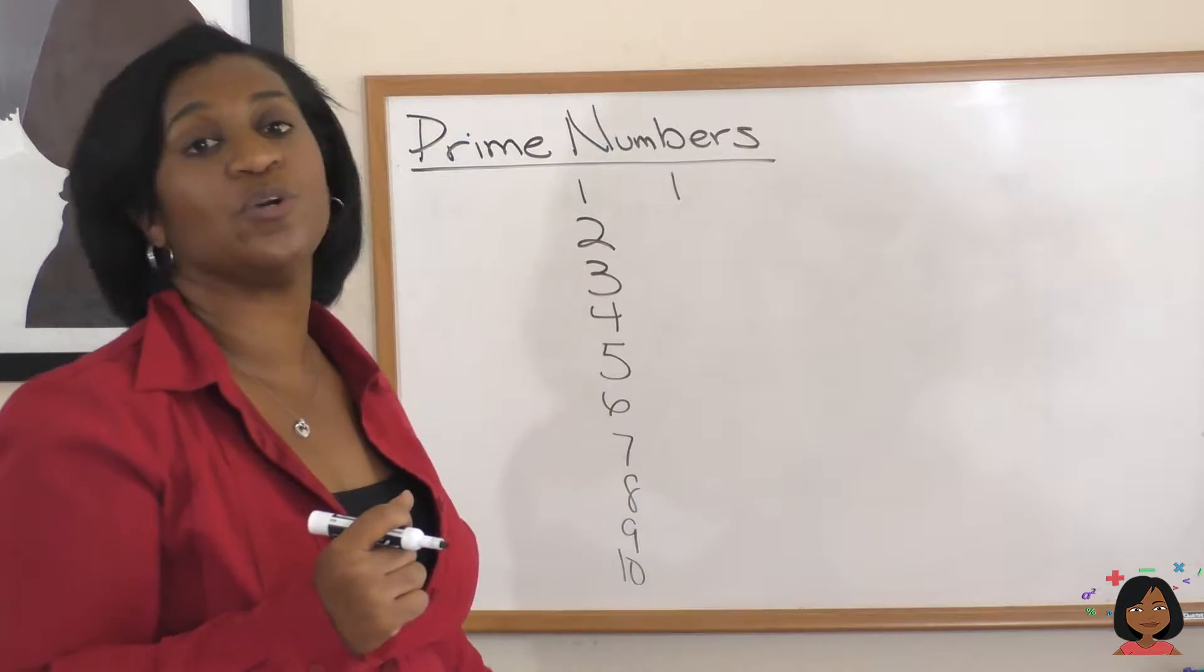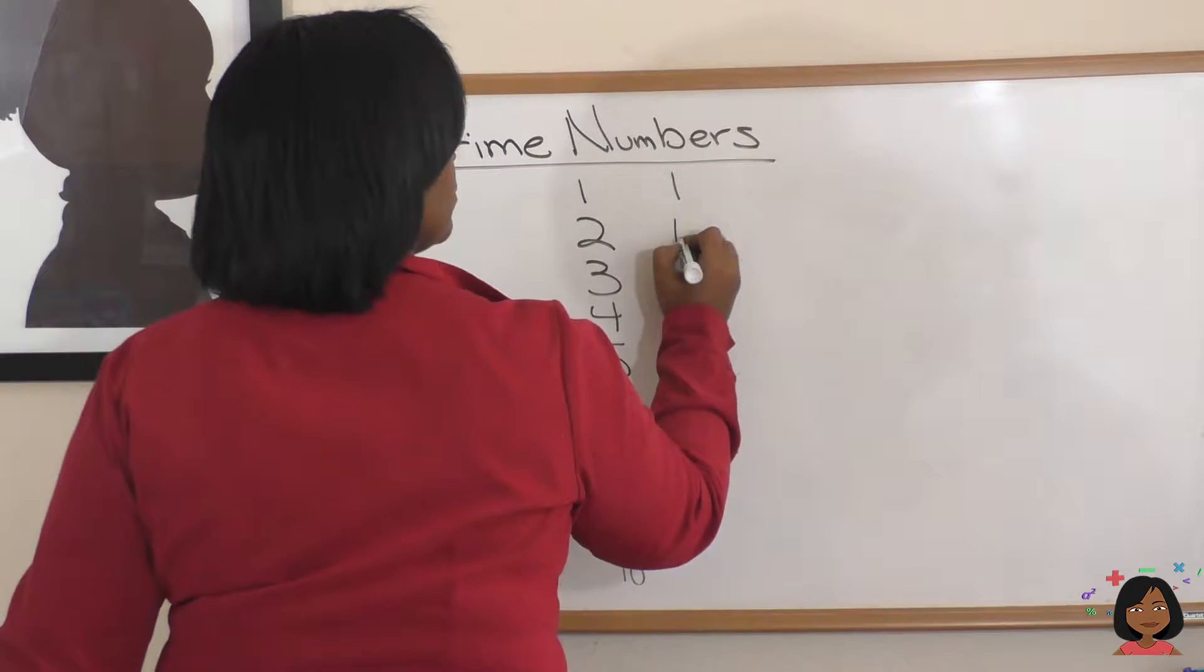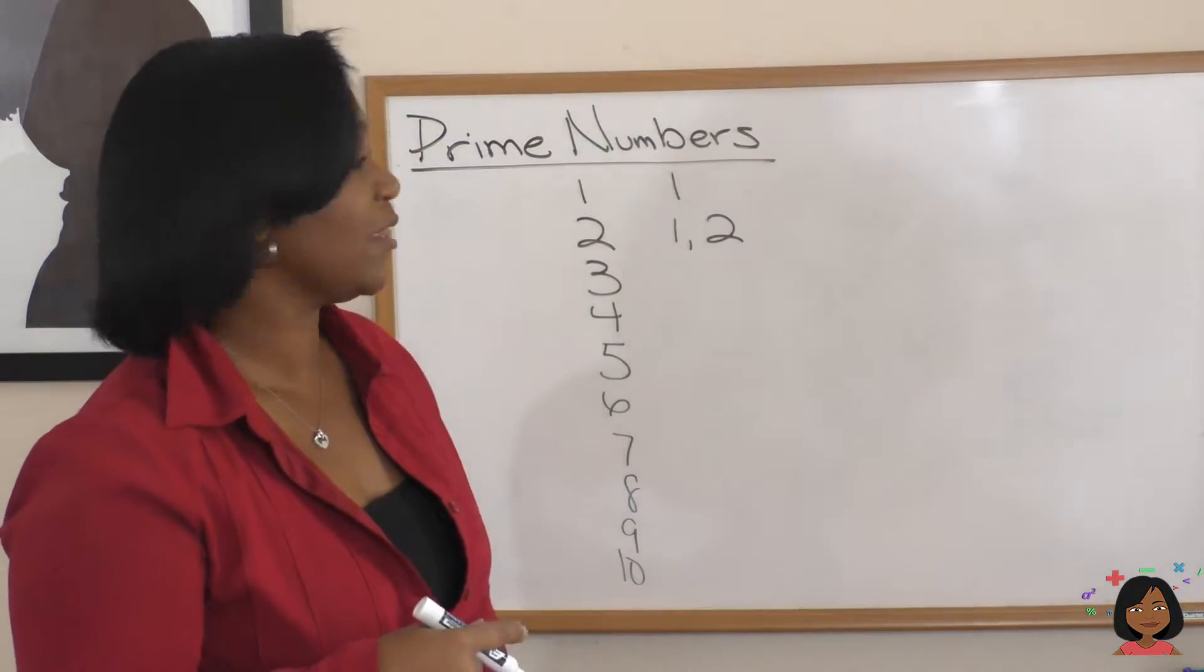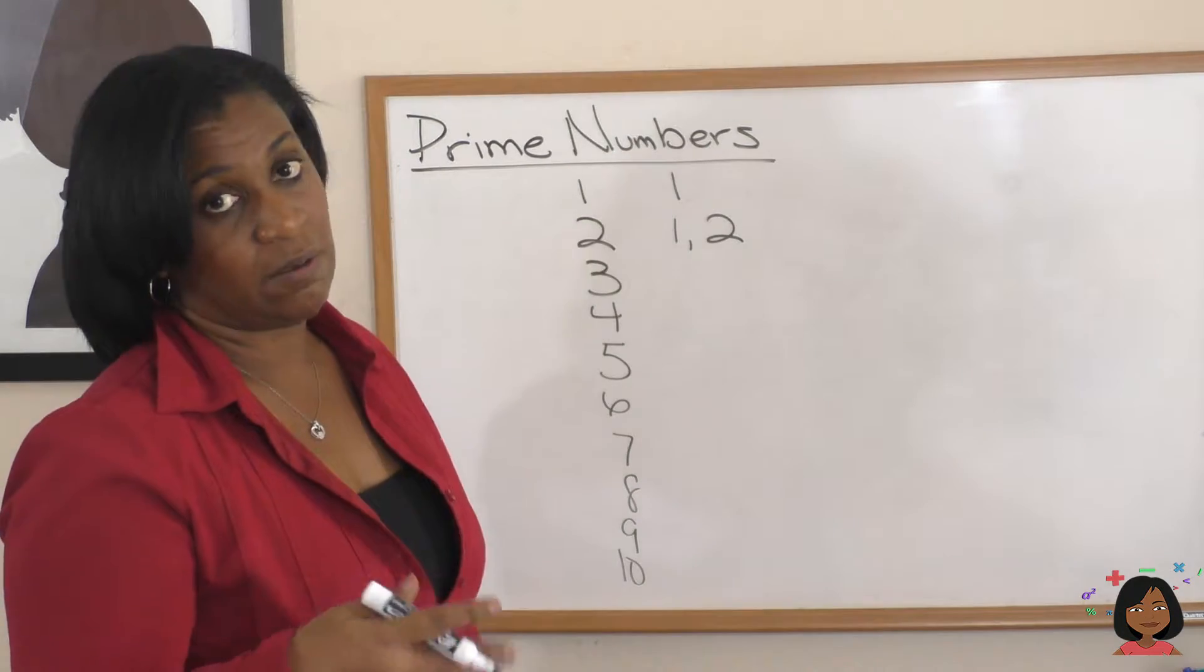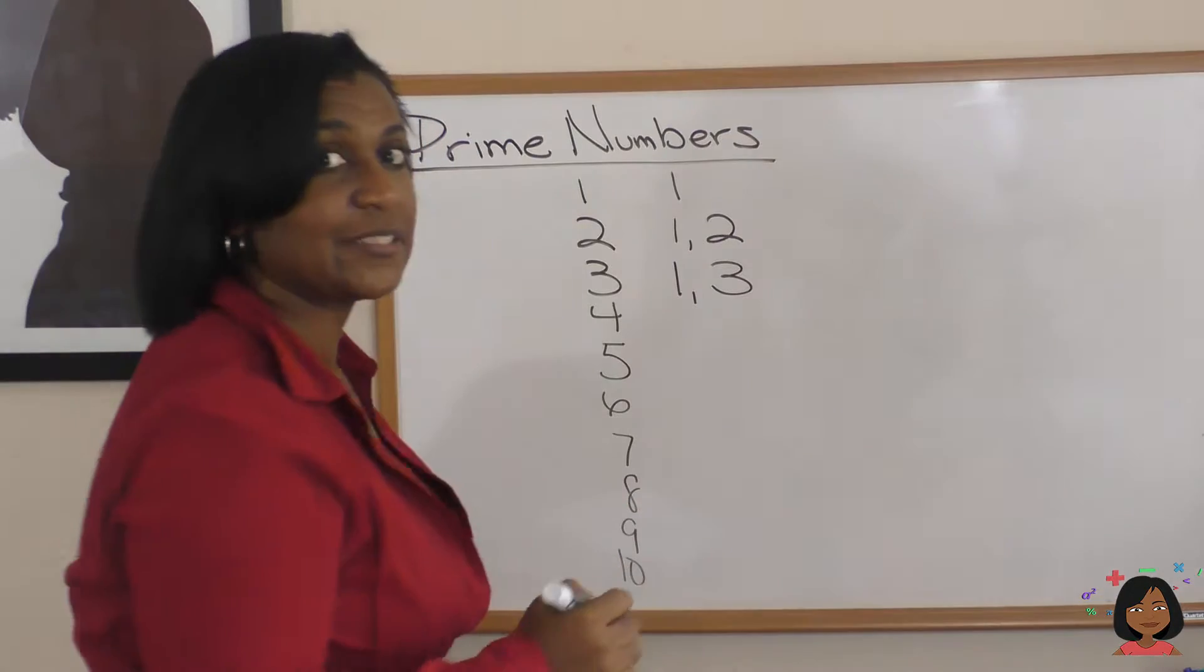What about 2? We know that 1 times 2 equals 2. Any other numbers? No. Let's go to 3. 1 and 3 are factors of 3. Let's keep it going.